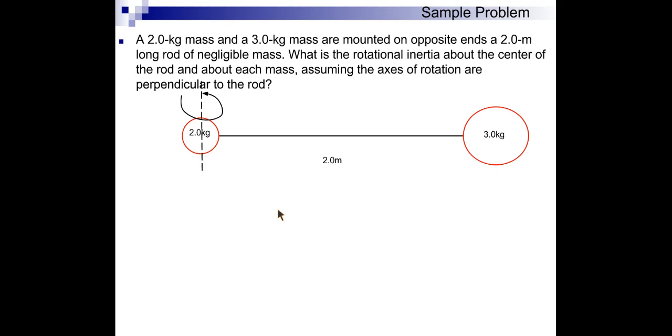All right, now we're going to rotate it about this end here. So, it's the same equation. We still have two masses, so we're going to need two of these expressions, M1, R1 squared, M2, R2 squared.